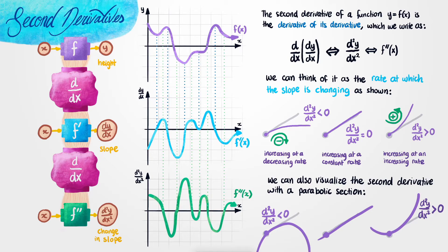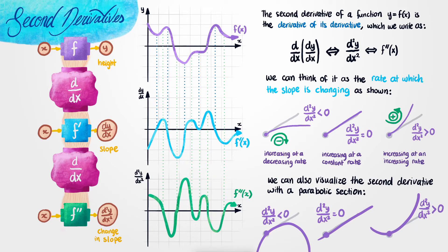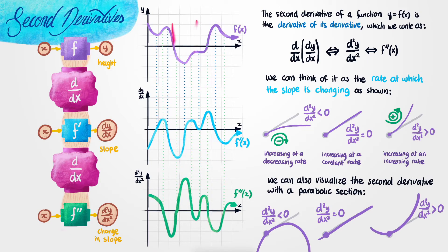In the case where your slope doesn't actually change, a parabola doesn't really make much sense, so the parabola of best fit is actually a straight line. This makes sense if we look at the graph: over here we have a parabola that looks concave down, and its second derivative is negative. Over here, we have a parabola that looks concave up, and its second derivative is actually positive. Similarly, in areas where it looks like we have a straight line, if we follow the graph down, it looks like the second derivative just equals zero.